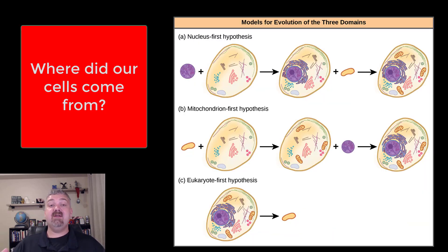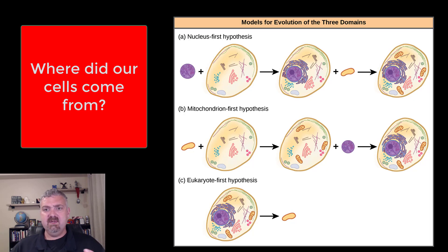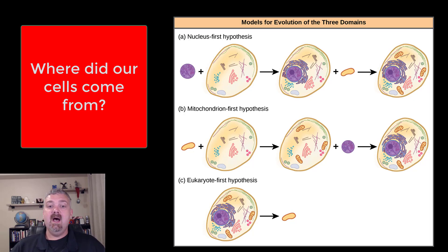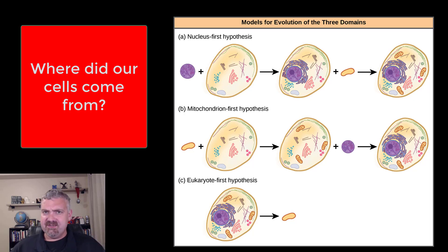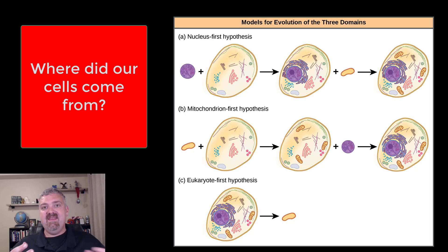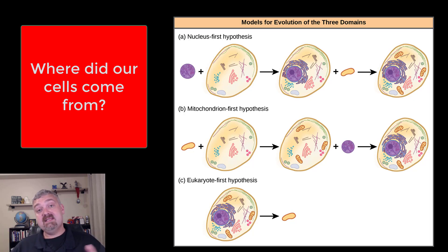There are actually three separate models for where the different domains came from — the archaea, the prokaryotes, and the eukaryotes. First, the nucleus-first hypothesis: no matter where you think cells come from, whether the nucleus evolved on its own or came from DNA somewhere else, it's very tricky. Some theories say the nucleus showed up first and then prokaryotic cells built around it to make a more complex eukaryotic cell. The mitochondrion-first hypothesis says the key would be the mitochondria powering this process and making simple cells more complex and adaptable. The third — the eukaryote-first hypothesis — actually says that more complex eukaryotic cells were here first and then degraded and became prokaryotes like bacteria. Most people would not agree with that.